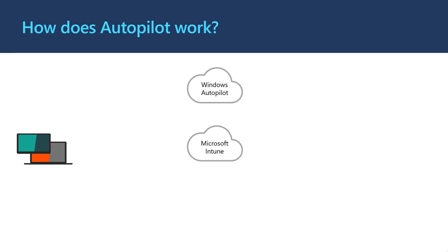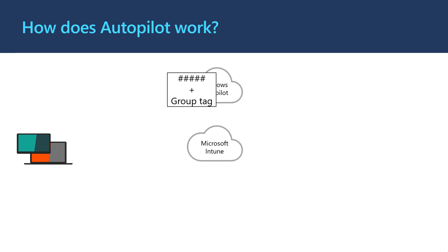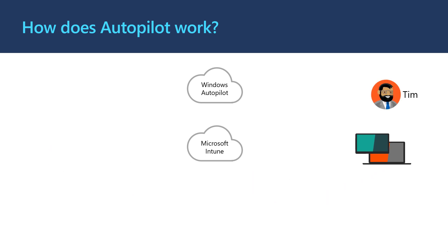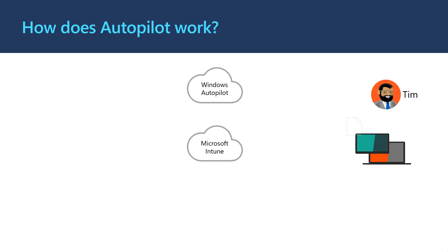We reach out to our partner and purchase a laptop. Our partner imports the unique identifier for the new laptop, called a hardware hash, into our Autopilot service. Now we deliver the laptop to Tim. Tim gets out his new laptop, turns it on and connects it to Wi-Fi. Tim's laptop connects to the Autopilot service and sends its unique identifier. Autopilot responds with the Autopilot profile and instructions that tells Tim's laptop to connect to Intune. Tim's laptop is now configured and ready for learning.